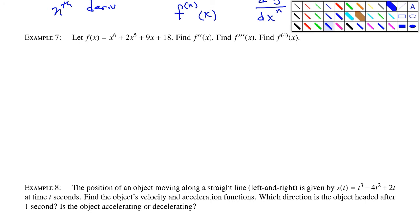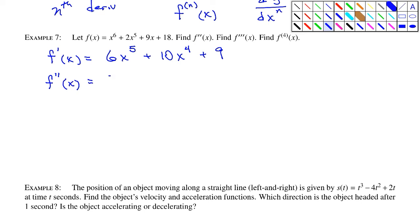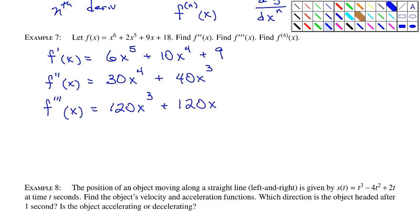Example number seven: let f of x equal x to the sixth plus 2x to the fifth plus 9x plus 18. Find the second, third, and fourth derivatives of f. First derivative: 6x to the fifth plus 10x to the fourth plus 9. Second derivative f double prime of x: 30x to the fourth plus 40x cubed. Third derivative: 120x cubed plus 120x squared. Fourth derivative: 360x squared plus 240x.